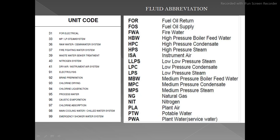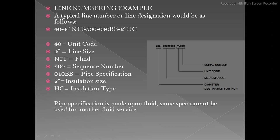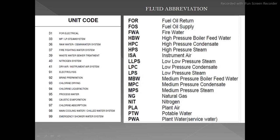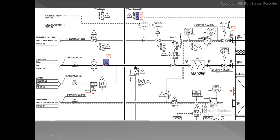Whenever you see a line number, check the legend to find what things stand for — unit code and fluid abbreviation. Here is an example from a P&ID showing how line numbers are presented on a line. You can see: '1 inch DW' stands for the fluid, '28PM' is the spec, and '36.2713' is the sequence number.